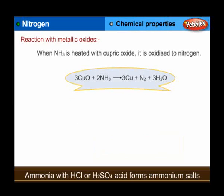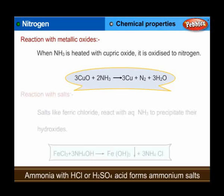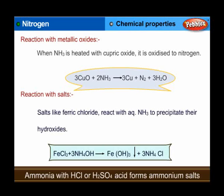Reaction with metallic oxides: when NH3 is heated with cupric oxide, it is oxidized to nitrogen — 3CuO + 2NH3 → 3Cu + N2 + 3H2O. Reaction with salts: salts like ferric chloride react with aqueous NH3 to precipitate their hydroxides — FeCl3 + 3NH4OH → Fe(OH)3 + ...